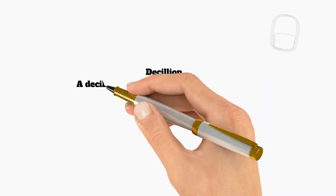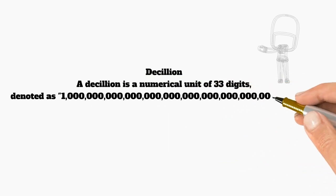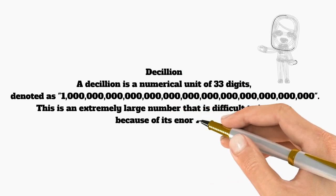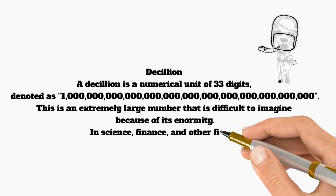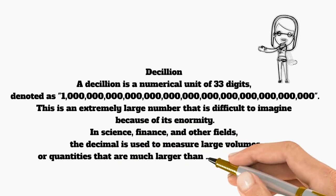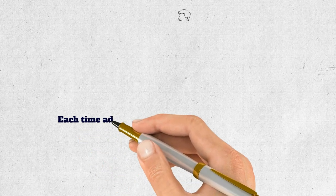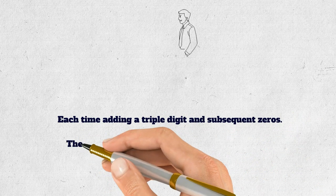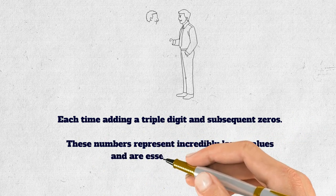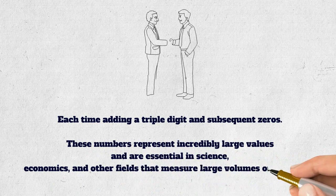Decillion. A decillion is a numerical unit of 33 digits. This is an extremely large number that is difficult to imagine because of its enormity. In science, finance, and other fields, the decillion is used to measure large volumes or quantities that are much larger than standard quantities, each time adding a triple digit and subsequent zeros. These numbers represent incredibly large values and are essential in science, economics, and other fields that measure large volumes or quantities.